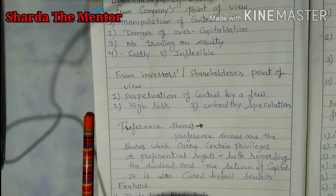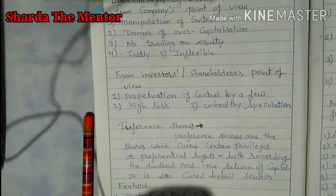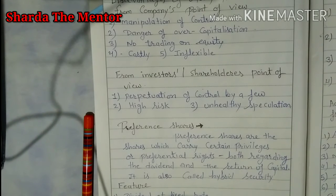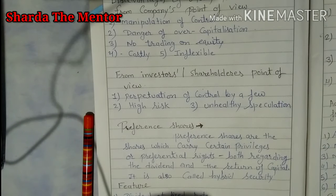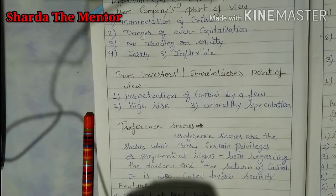The second topic is preference shares. As we already know the difference between equity and preference shares — preference shares carry certain privileges. Basically, preference shareholders get dividend first before equity shareholders, and in case of any kind of crisis or winding up of the company, they get their capital back first as compared to equity shareholders. If any shareholder has these two types of privileges, that share is considered a preference share.